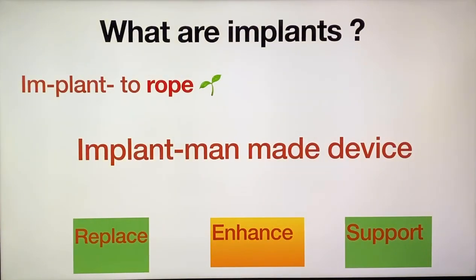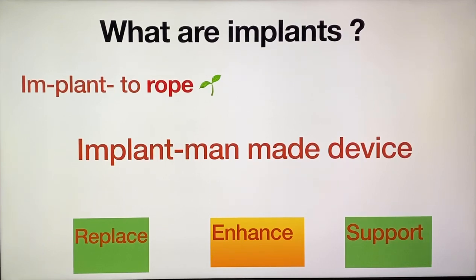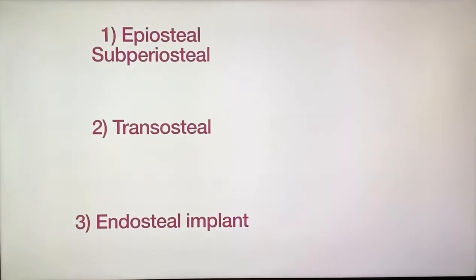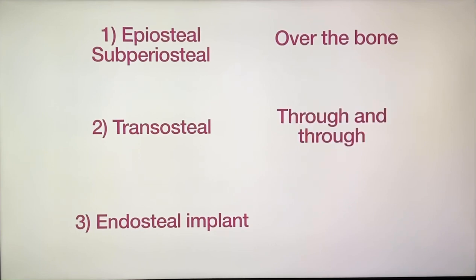First we will study about implants. As the name says, 'implant' — plant means to place. An implant is a man-made device used to replace a biological structure, to enhance the structure, or to support it. It is in contrast to transplants, which replace living structures. Implants are mainly of three types: epiosteal implants, which sit over the bone; transosteal implants, which go through and through the bone; and endosteal implants, which go inside the bone.